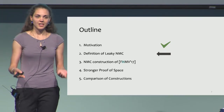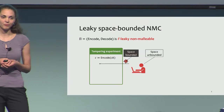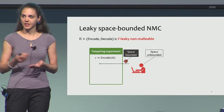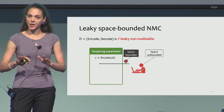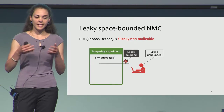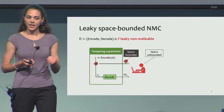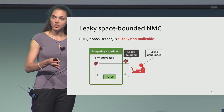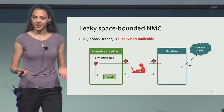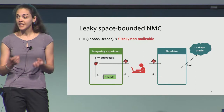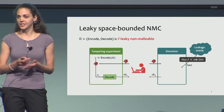Before I get to the code construction, let me be more precise about what leaky non-malleable codes are — not a formal definition, just a high-level idea. We have a coding scheme consisting of encoding and decoding algorithms. Consider a polynomial-time adversary that is space-unbounded. It can prepare a tampering function that can be arbitrary but space-bounded. This tampering function tampers with a target codeword C to produce codeword C1. The adversary then learns the result of decoding C1. We say our coding scheme is L-leaky non-malleable if there exists a simulator that can simulate this tampering experiment without knowing the original secret, but getting a small hint of L bits of leakage.